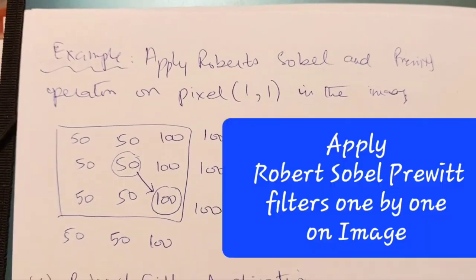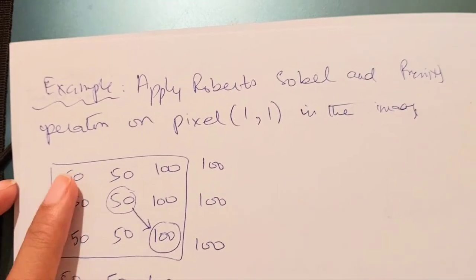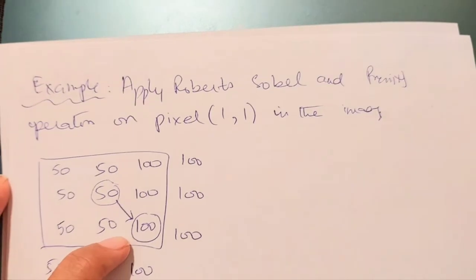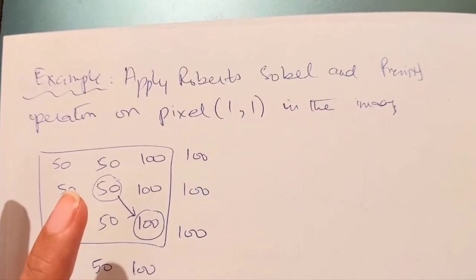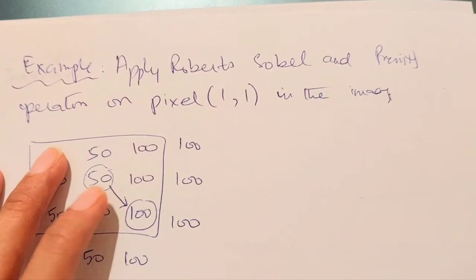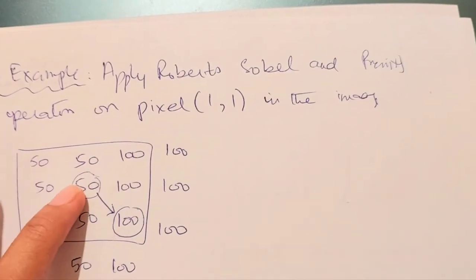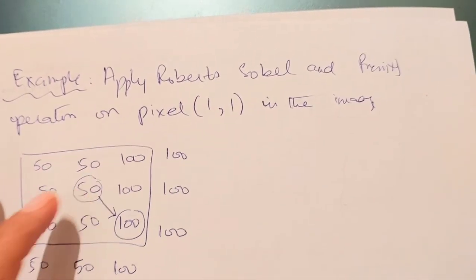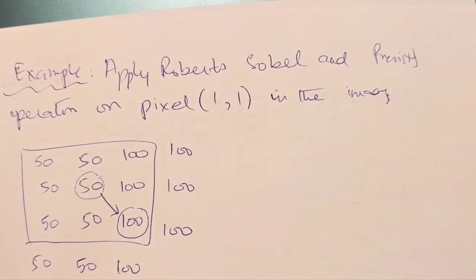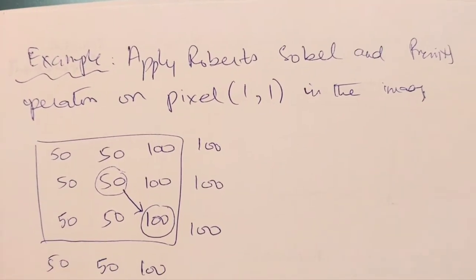We will solve an example to understand how to apply these filters. We have a 3x3 image where the values represent pixel intensity values. We have been asked to apply the Roberts, Sobel, and Prewitt filters on pixel position (1,1). In a question, a specific pixel will be marked or indicated for you to apply the filters.